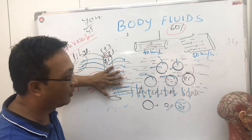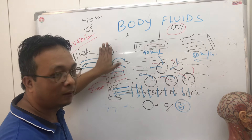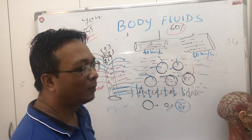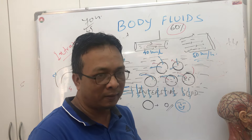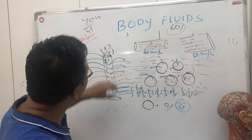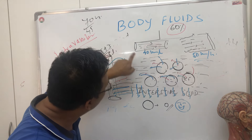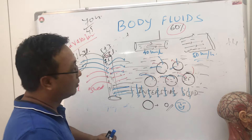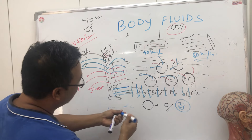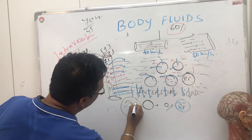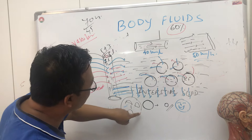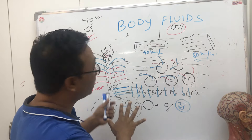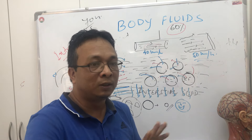Every time you drink water, it goes to the blood and makes five liters become six liters. Our blood volume cannot just keep increasing — the extra amount of water immediately goes to the interstitial fluid, which takes the load. If water keeps coming in and on and on, it goes into the cells. Those cells, which were normally happy, become very unhappy — they get too big and will soon rupture.